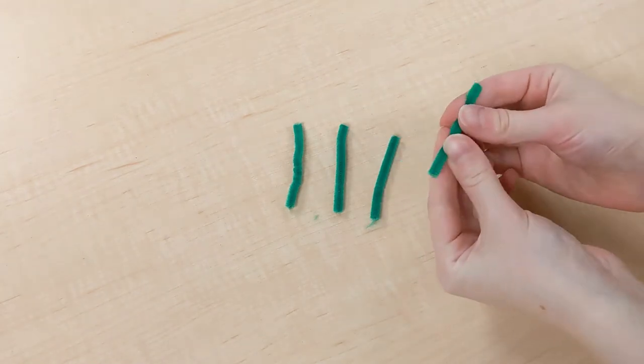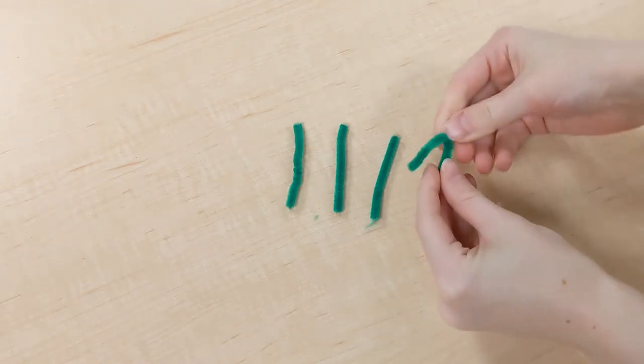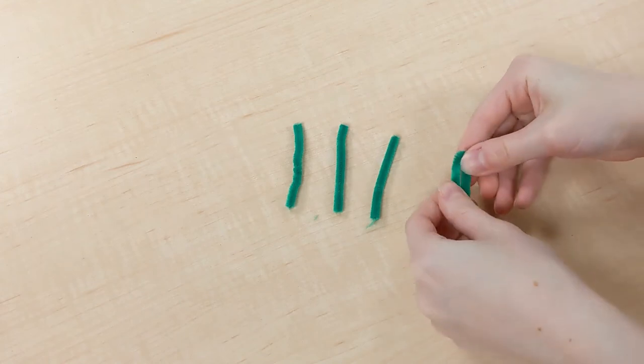And finally, we need these four pieces of pipe cleaners. We're going to bend them in half to create little legs for your turtle.